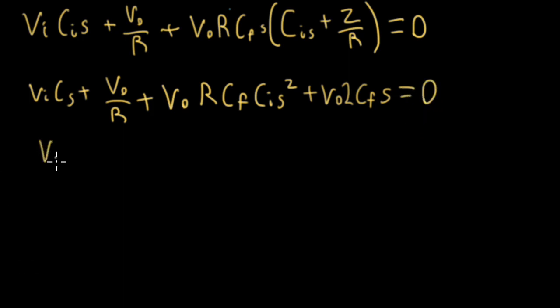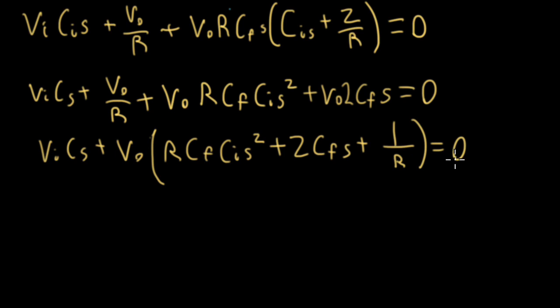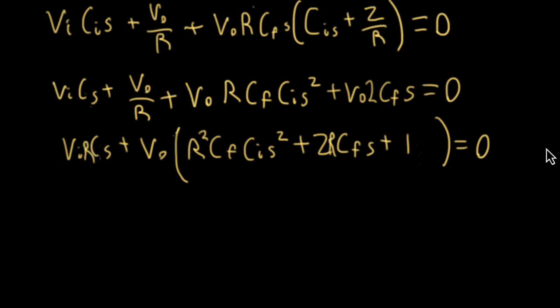So let me write this as VI, CS, plus VO, and all of this stuff here, but arranged according to a polynomial ordering. So I'll have R, CF, CI, S squared, plus 2 CF, S, plus 1 over R, and we'll write equal zero. And actually, instead of 1 over R here, let me multiply everything through by R. So I'll put an R here. This will now be an R squared, and I'll put an R here.